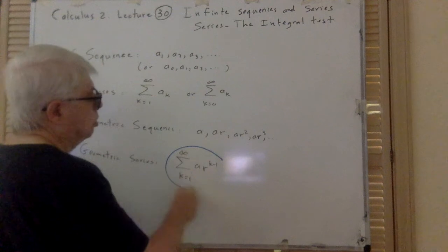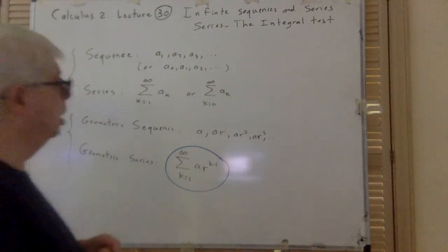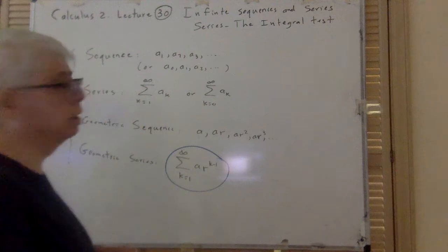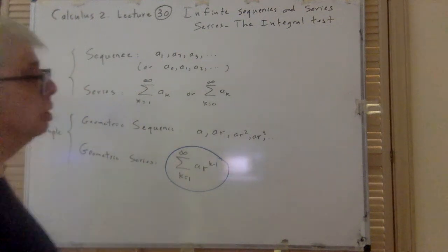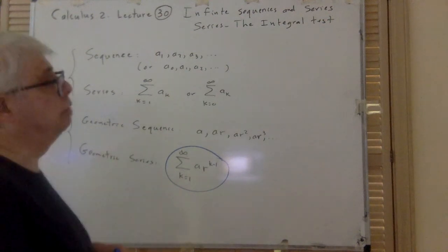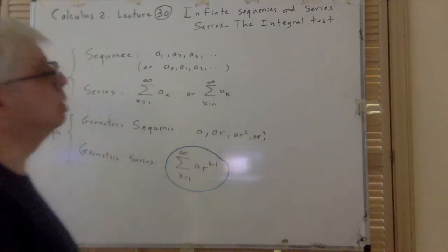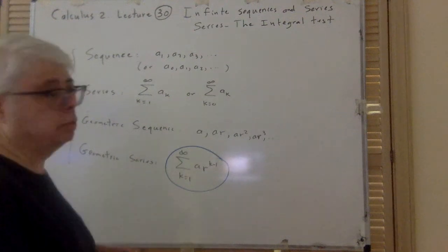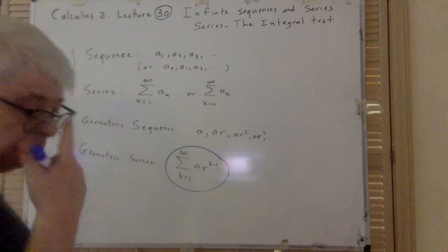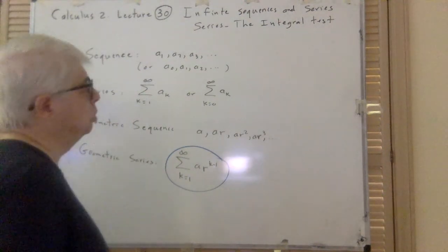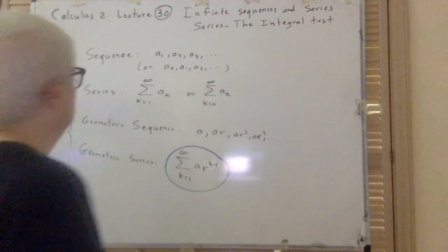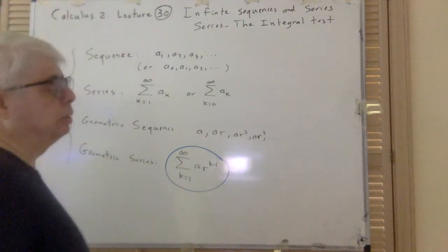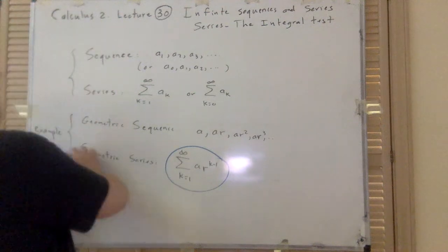Our goal is to study convergence and divergence of infinite series. As mentioned in the first lecture, many nice transcendental functions — if they are continuous and differentiable as many times as we like — can be written as a series called a Taylor series, or the special case McLaurin series. We can use that to calculate values of those functions at certain points with very low error.